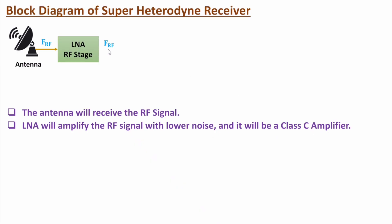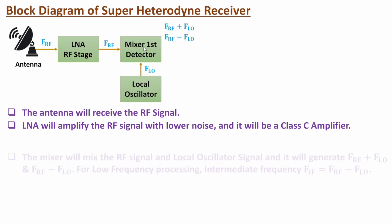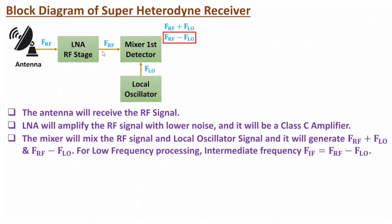This RF signal is then given to the mixer, which is the first detector. The mixer mixes two signals — mixing means it multiplies these two frequencies. After multiplication, at the output we will have the addition of these two frequencies and the subtraction of these two frequencies. At the output we have FRF plus FLO, where FLO is the frequency of the local oscillator, and the second frequency is FRF minus FLO. Since we want to process at lower frequencies, we take the difference. Using a filter, we can eliminate the high frequency component (addition) and use the lower frequency component, which is the difference. This is the intermediate frequency — FRF minus FLO.